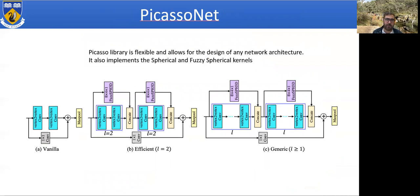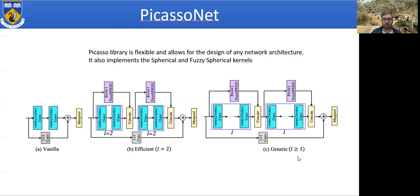Along with the Picasso library, we also present a new network architecture called PicassoNet. The vanilla block consists of two vertex-to-vertex convolutions with a shortcut connection. The efficient block contains two vertex-to-vertex convolutions as well as one point-based convolution for feature concatenation. It can process meshes with 1 million faces per second at inference time while maintaining highly competitive results. The generic convolution block uses more than one vertex-to-vertex convolution together with a single point-based convolution before feature combination with max pooling.